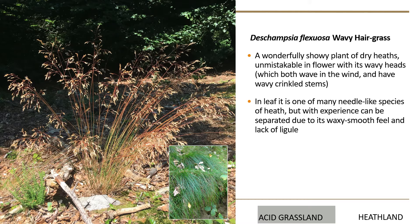Without the flowers, wavy hair grass is a little bit trickier. In heathland and acid grassland there are quite a few needley grasses — these dry habitats are full of species which have evolved needley leaves as a classic way of coping with drought. With wavy hair grass, the leaves are quite lax and floppy, certainly not sticking upright — they tend to droop down. Once you have a bit of experience you'll appreciate they have a very waxy, smooth feel, whereas some other needley grasses can be quite rough.